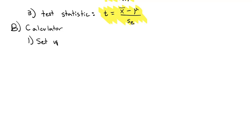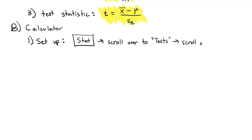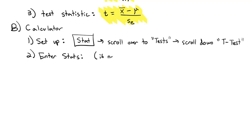First, we have to set up the test. You're going to hit the STAT button, then scroll over to TESTS, then scroll down to the T-Test. Once you set it up, you have to enter the stats from your study. The calculator has an option of entering the data or entering the stats — we're going to enter the stats, so select STATS.